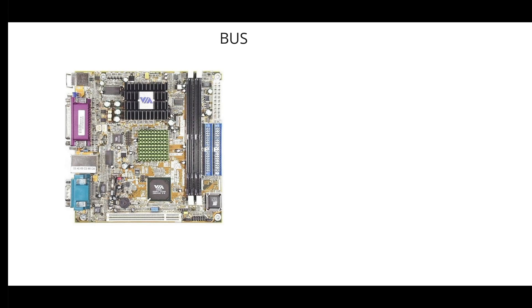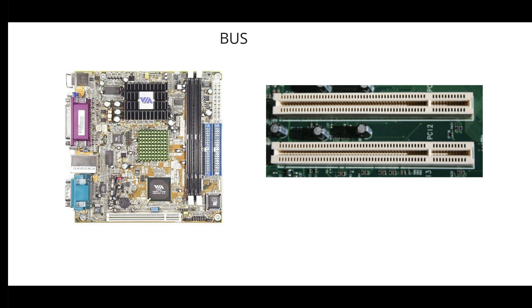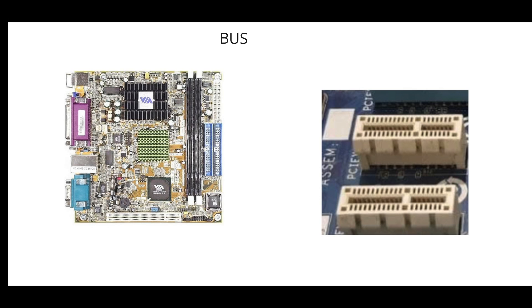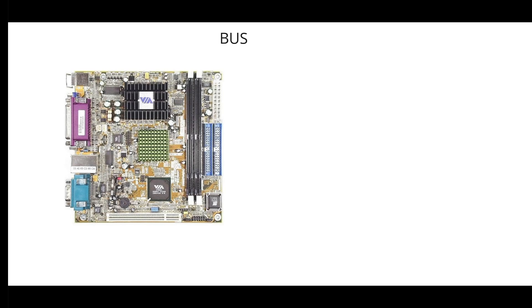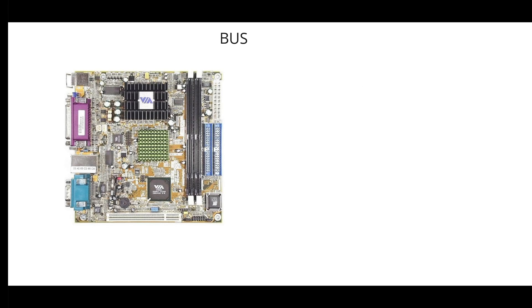Every computer has an internal bus or an external bus. The internal bus communicates between internal components, while the external bus communicates with external peripherals. Common buses include the SATA bus for connecting hard drives, the PCI bus for hard disks and sound cards, PCIe for expansion cards, USB (Universal Serial Bus) for connecting cameras, scanners, or printers, and Thunderbolt for peripherals connected via USB-C cable.